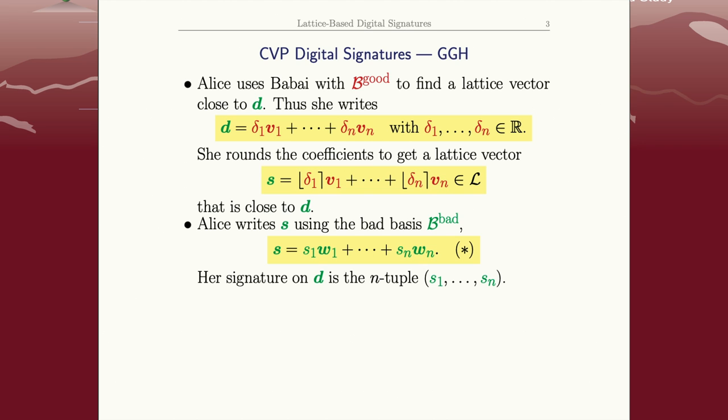I'll mention that the signatures here actually aren't that big—they're just n numbers. It's the public key that's large because the public key is the w vectors, so you need n vectors each with n coordinates. In terms of signature size, GGH actually isn't that bad, but the public keys are pretty big.